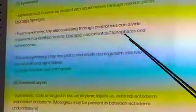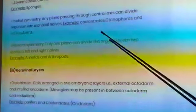Radial symmetry: any plane passing through central axis can divide organism into identical halves. Examples: coelenterates, ctenophores, and echinoderms.